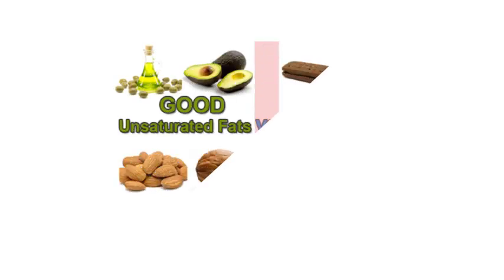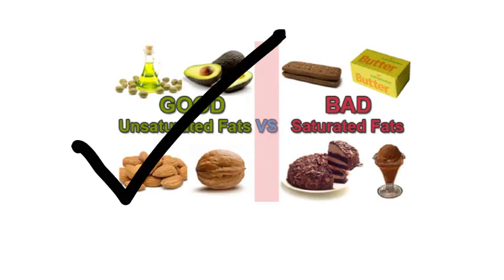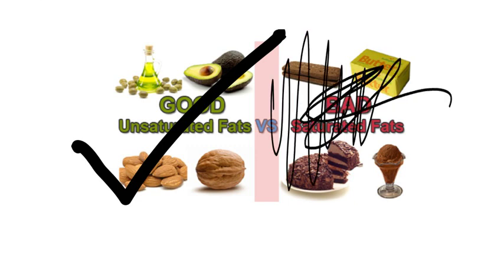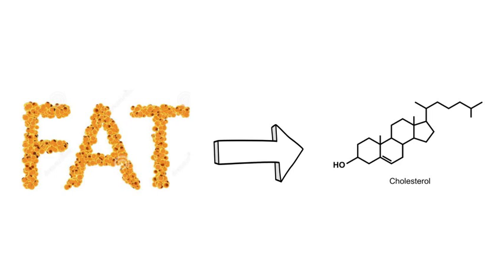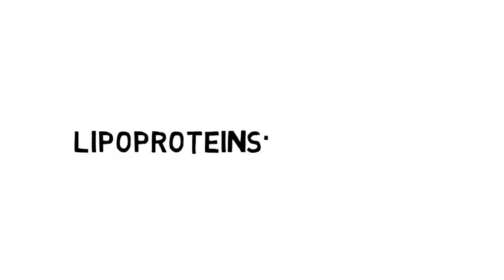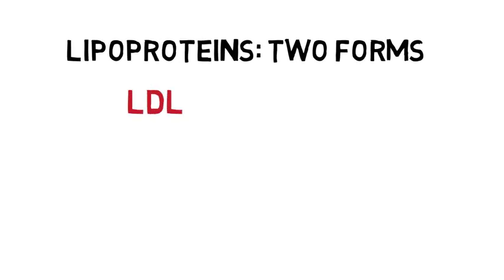Unsaturated fats are typically classified as good fats, as these fats have been shown to help reduce heart disease, lower cholesterol levels, and have other health benefits when they replace saturated fats in the diet. When we consume fats, we often consume cholesterol. Cholesterol is carried in the blood by attaching to proteins called lipoproteins. There are two main forms: low-density lipoprotein, LDLs, and high-density lipoproteins, HDLs.